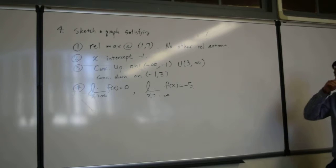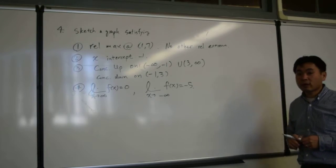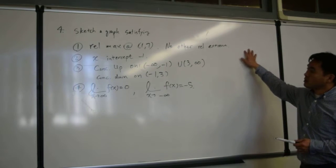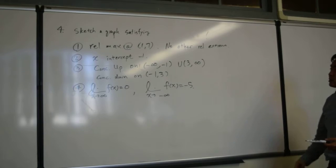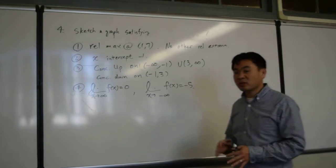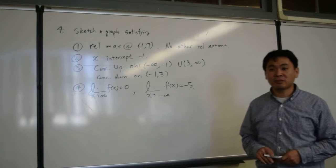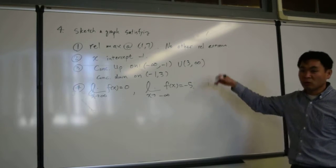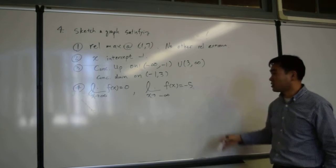Here, we're given four conditions a graph has to satisfy, and we have to come up with a graph. This question doesn't have a unique answer. You can have pretty similarly looking graphs that are all valid answers, they just have to satisfy these conditions.